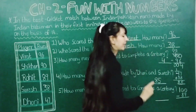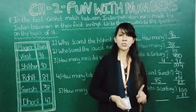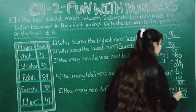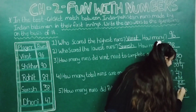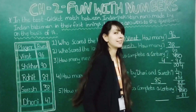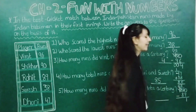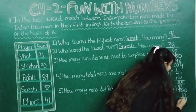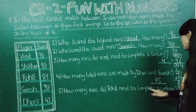Now in the ones place, 0 is there, so 9 cannot go from 0. In the tens place also 0 is there. We will borrow from 1 in the hundreds place — cut this 1, make it 0, and this becomes 10. Now 10 minus 9 gives 1. Then 9 minus 8 gives 1. This 0 will come down. So here you can say 11 runs Rohit needs to complete a century.